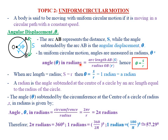The angle theta in radians is given by the arc length AB divided by the radius of the circle. So theta equals S over R, where S is the arc length AB and R is the radius OB (which equals OA). This formula is used to calculate the angular displacement.